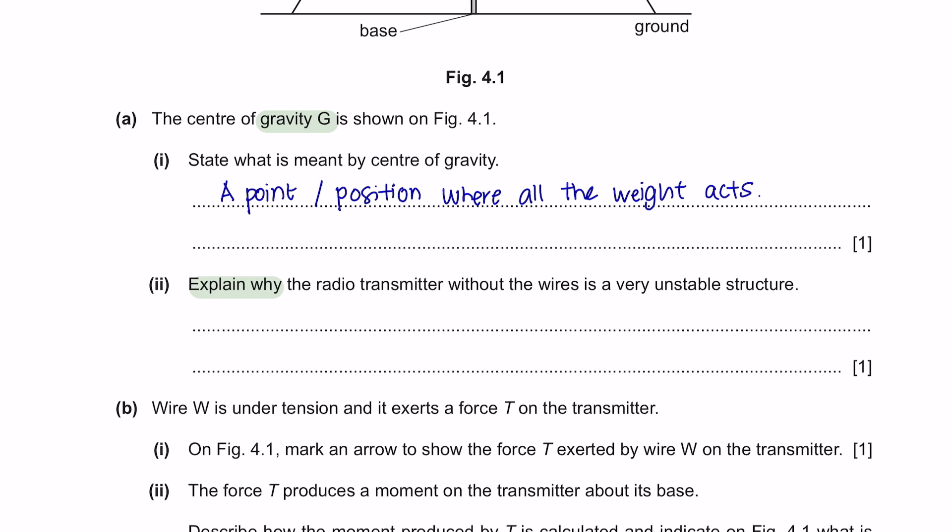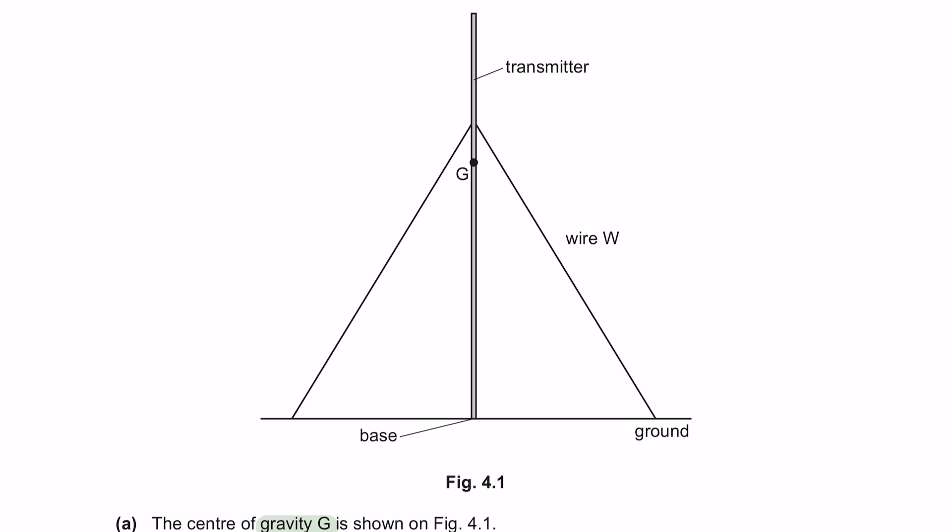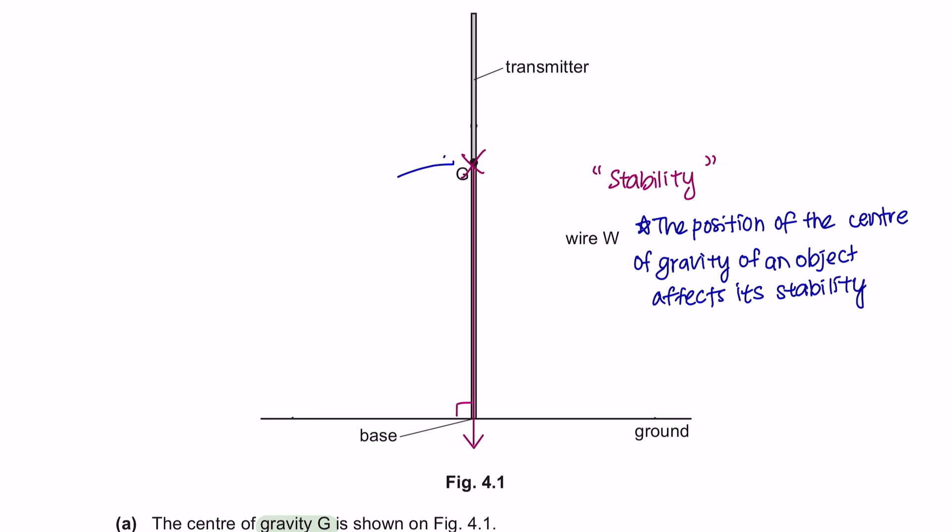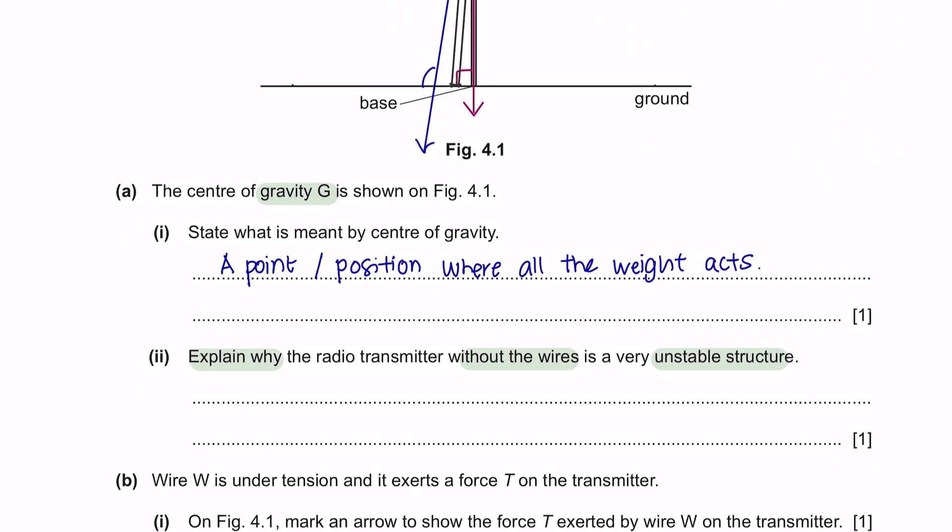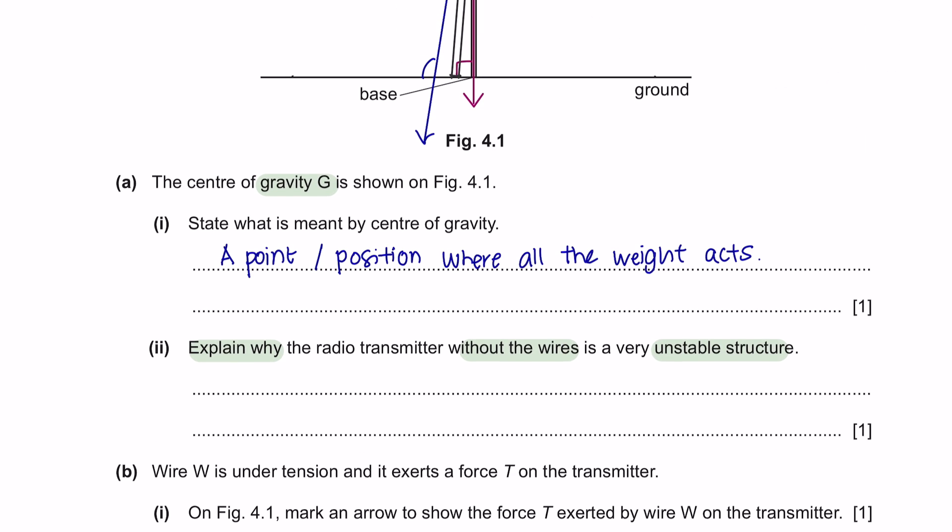Part 2. Explain why the radio transmitter without the wires is a very unstable structure. Now, when discussing about stability, the position of the center of gravity of an object affects its stability. An object will not topple if its center of gravity is vertically above its base. And without the wire, if there was just a slight tilt, the center of gravity now is no longer vertically above the base. And this will now cause the object to topple down easily. So, remember, the idea is that the center of gravity must be vertically above the base.